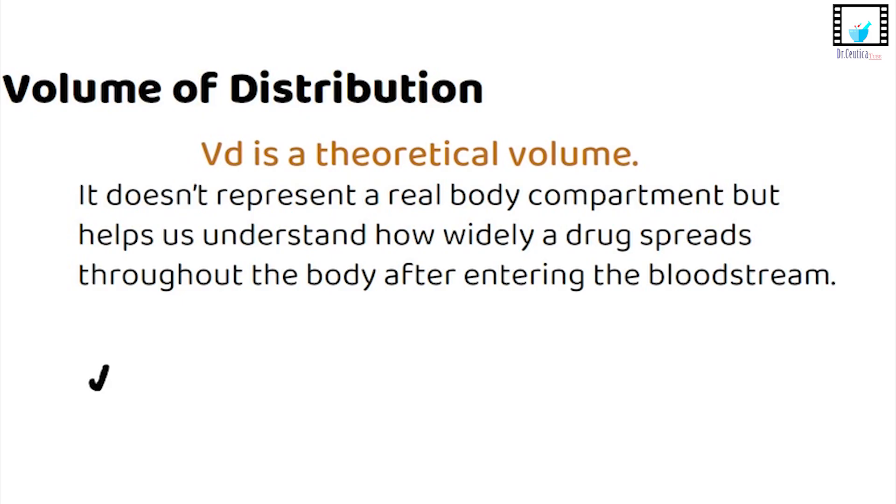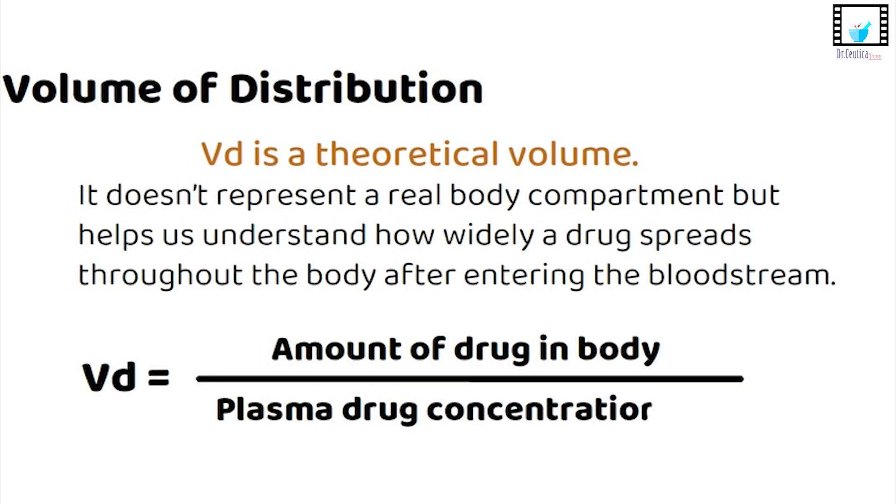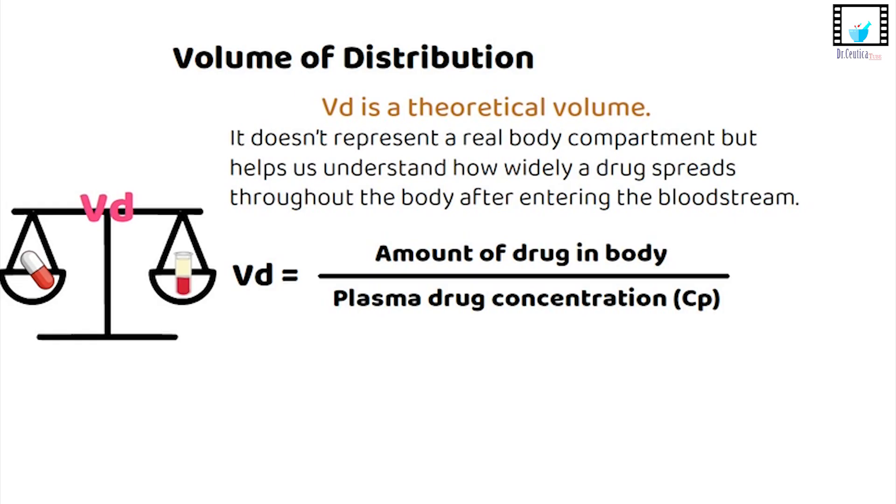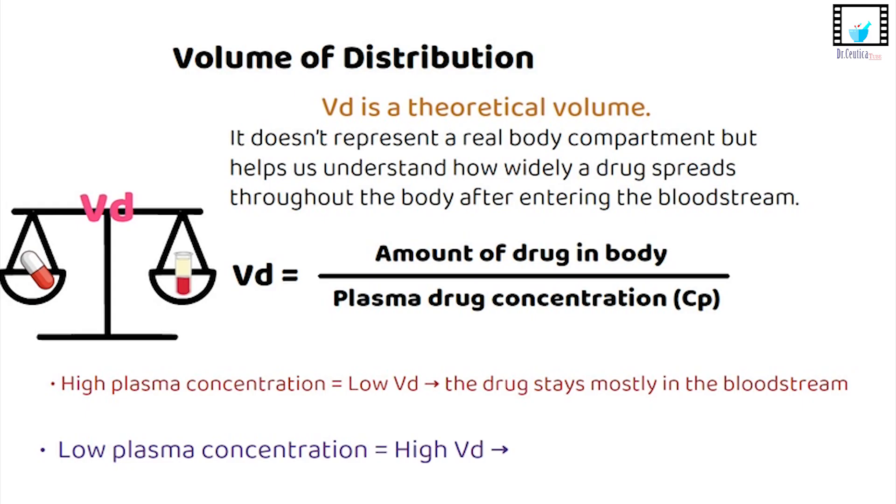From what you see in front of you VD is basically a proportionality factor that relates the amount of drug in the body to the concentration of drug measured in plasma. From this relationship you see that if a drug has high plasma concentration it will have low VD and if it disappears from the plasma meaning that its plasma concentration is low then it would have high VD.